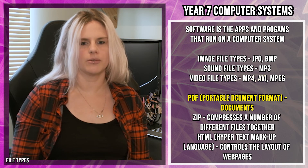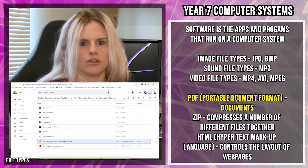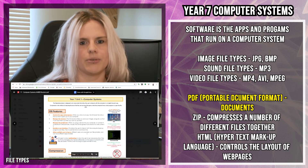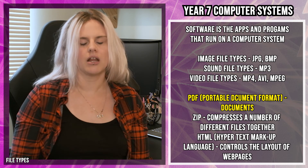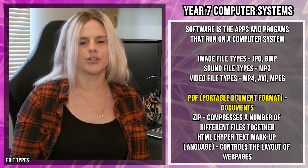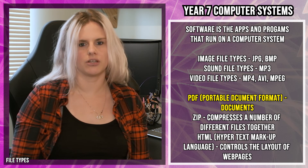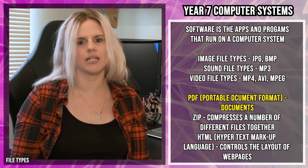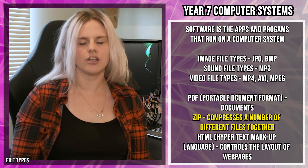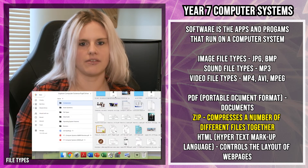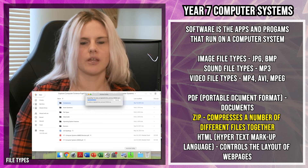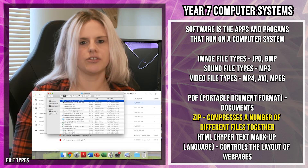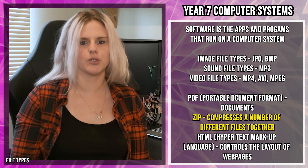PDF stands for Portable Document Format. A PDF is a document you can look at but can't edit. So if you have finished your work and don't want to make changes, and your teacher wants you to email it to them, you could save it as a PDF. PDFs are much smaller in size than the original file, so it's a good way of saving documents. However, once you've saved it as a PDF, you can't go back and edit it. Zip files are lots of different files compressed together. Once you zip files together, you can unzip them. The biggest advantage of zipping files is that you can save a lot of zip files together and it will take up much less storage.